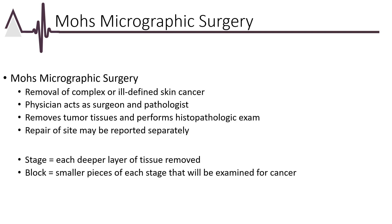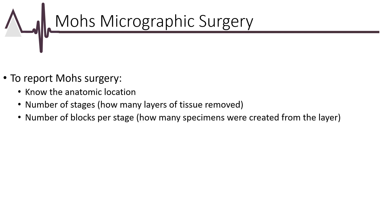In Mohs micrographic surgery, the physician acts as both the surgeon and pathologist. The Mohs surgeon treats complex or ill-defined skin cancers. In Mohs surgery, there are two concepts to know: stages and blocks. A stage represents each deeper layer of tissue removed; a block represents the smaller section of each stage that will be prepared for examination under a microscope looking for cancer. The key concepts in Mohs surgery are anatomic location, the number of stages or layers of tissue removed, and the number of blocks per stage — how many microscope-ready specimens were made from each stage of tissue removed.